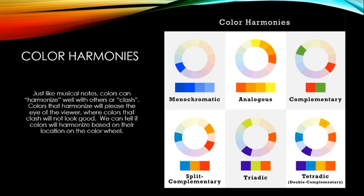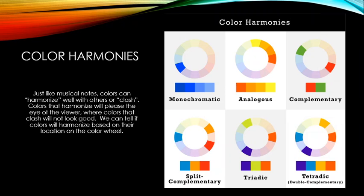A tetradic harmony is a double complementary — you pick two colors and then both of their complementaries, forming a rectangle on the color wheel. For example, blue and its complementary orange, plus a darker purple and its complementary goldenrod.